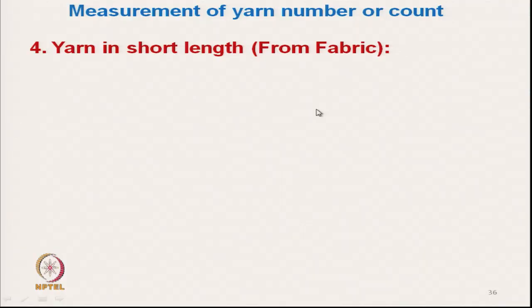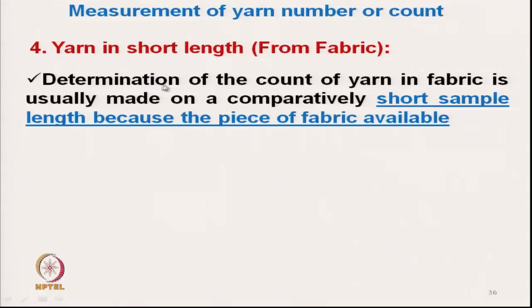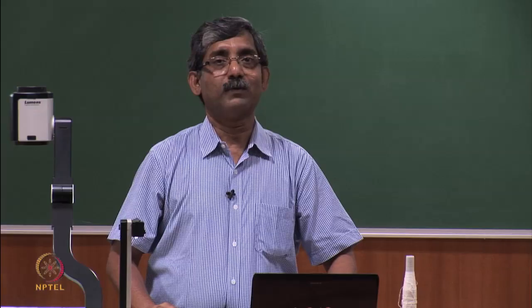Now, for the yarn count from short lengths — suppose we have a fabric and want to get the yarn count. Determination of yarn count in fabric is usually made on comparatively short lengths, because only pieces of fabric are available in most cases and it is not possible to take out 120 yards of yarn from a fabric. The fabric is conditioned in the testing atmosphere for typically 24 hours.